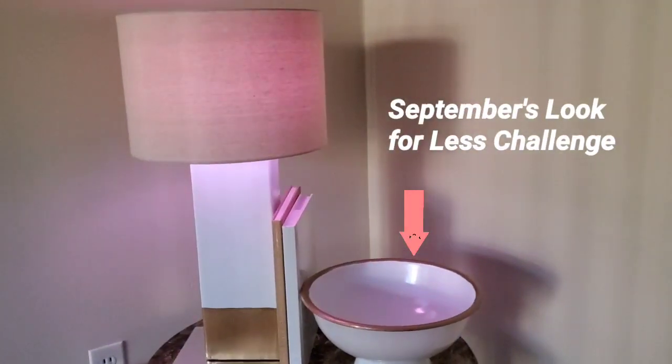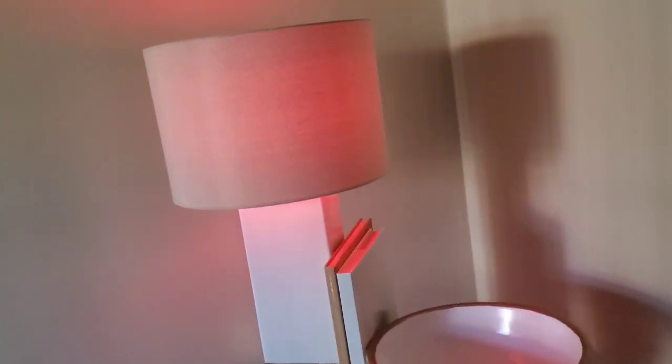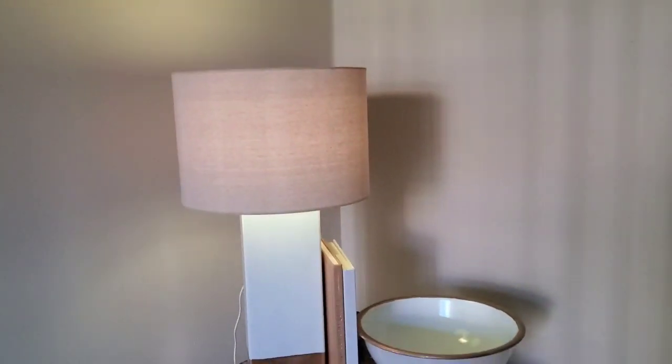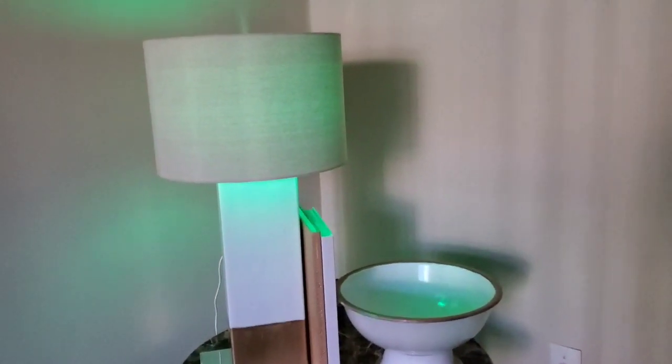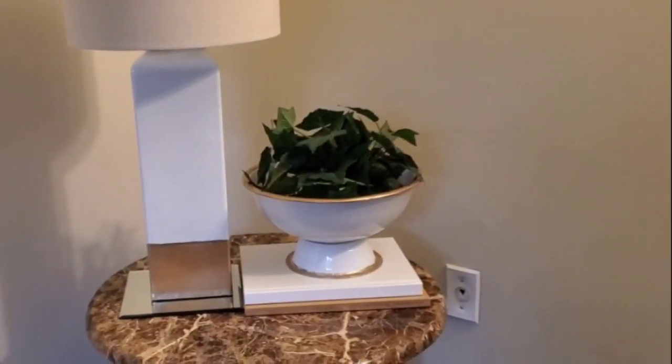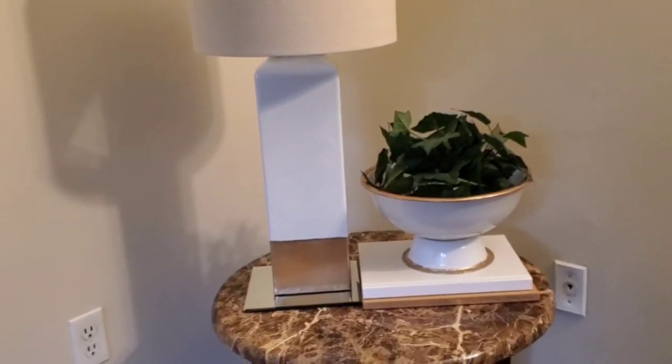This is the look-for-less challenge from September where I used the same spray paint and gold paint. Again, if you're interested in seeing that, if you have not seen that, I'll leave a link to that in the description box below. Here I just put some greenery in the bowl and just kind of styled it, but I love the way my lamp came out.